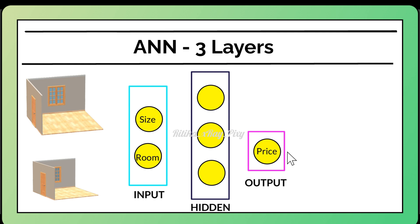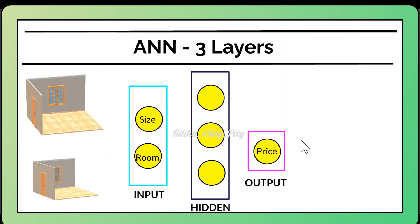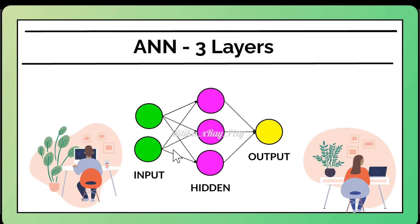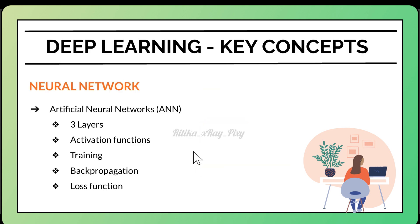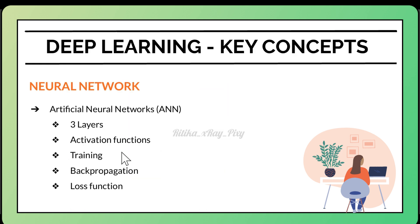The output neuron predicts the house price. For forward propagation, the input layer neurons receive the feature values, and each hidden neuron calculates a weighted sum of inputs, adds a bias, and applies an activation function. Activation functions are applied to each neuron to introduce non-linearity. Commonly used activation functions include rectified linear unit (ReLU) or sigmoid.